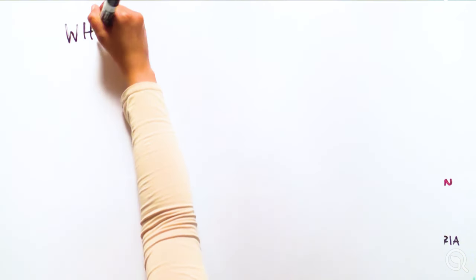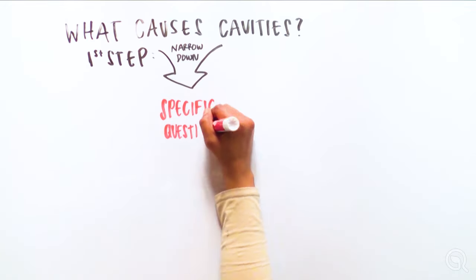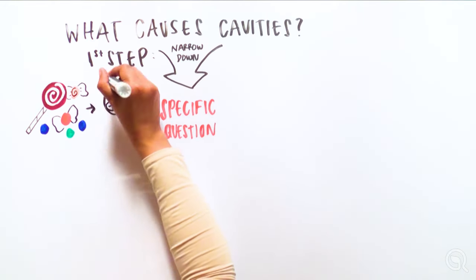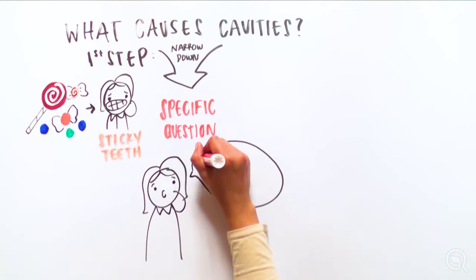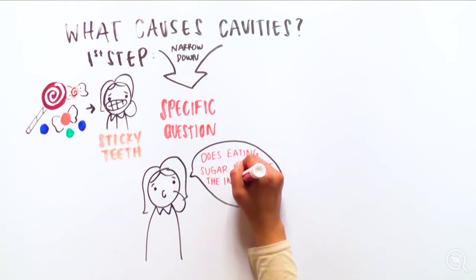Say we want to understand what causes cavities. The first step is to narrow down the specific scientific question to answer. For example, we know our teeth can feel particularly sticky after eating sugary foods like cotton candy. Based on this, a scientist may ask: does eating more sugar increase the incidence of cavities?